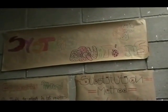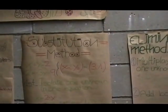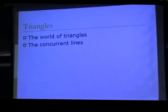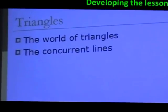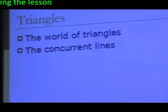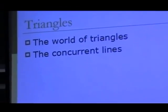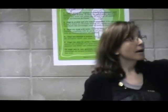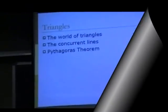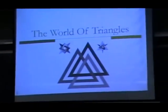Look at the screen, please, because we are going to start to revise the last slide. First, you revise triangles. The word of triangles is always kind of things we want to know. And then the concurrent lines — remember that the concurrent lines are angle bisector, median, altitude, and perpendicular bisector. The concurrent point of angle bisector is the incenter. Then we'll start with triangles.